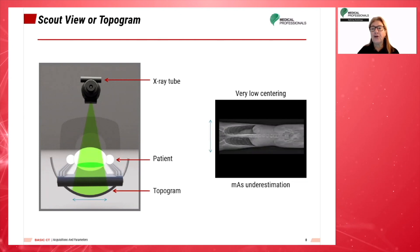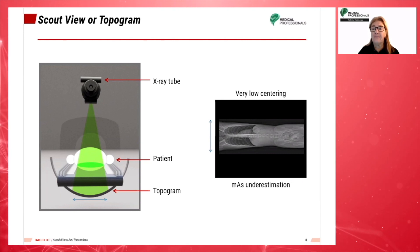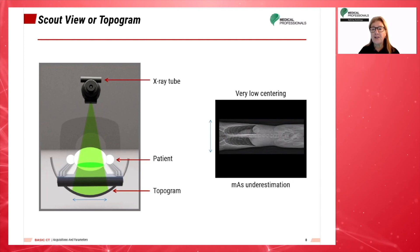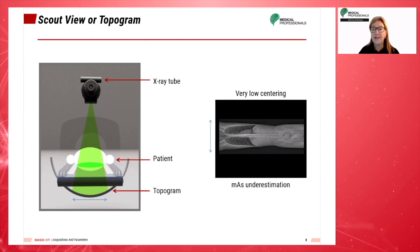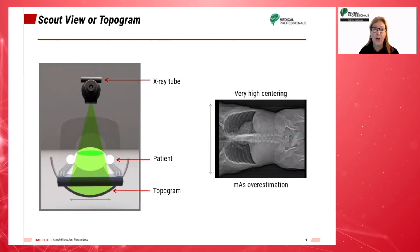Any vertical or horizontal deviation in patient centering with respect to gantry isocenter — which is the point in space through which the central rays of the radiation beams pass — leads to overestimation or underestimation of attenuation. This can result in erroneous estimation of tube current with the automatic exposure control technique. This shows an example of very low centering with an mAs underestimation, and an example of very high centering with a resultant mAs overestimation.